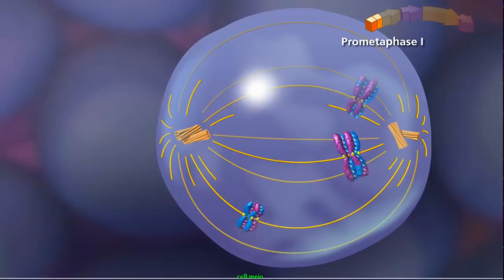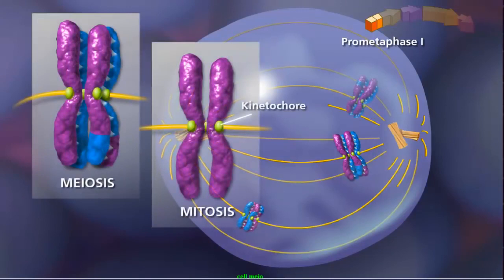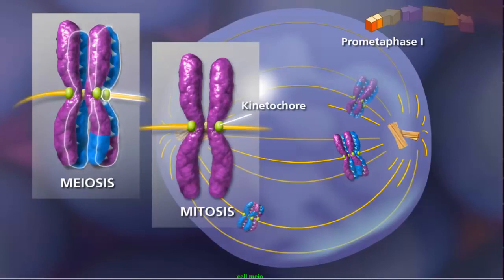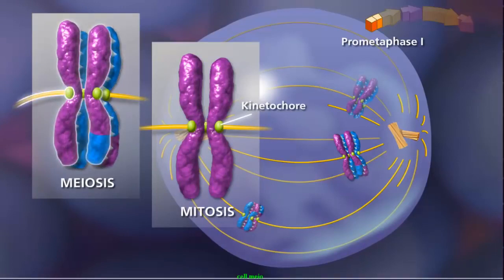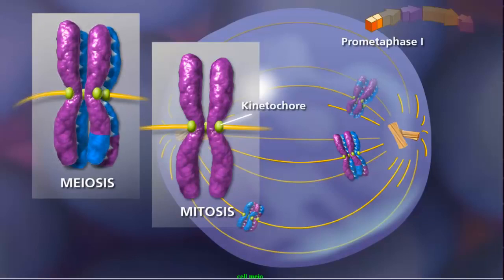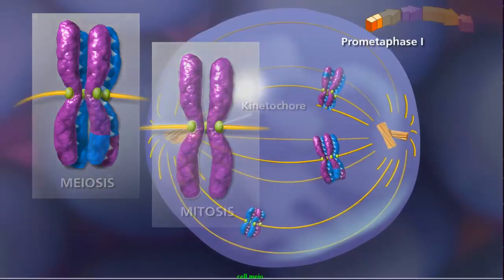Here, another key difference between mitosis and meiosis occurs. Because of synapsis and crossing over in meiosis, homologous chromosomes remain aligned, so that a pair of sister chromatids is attached to only one pole by the kinetochore microtubules. In mitosis, each sister chromatid is attached to a spindle fiber. The fibers originate from opposite poles.